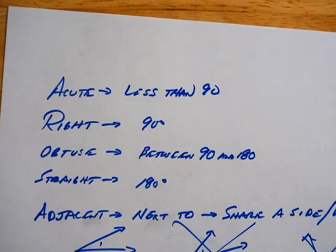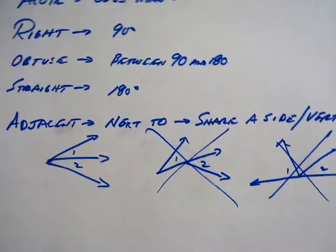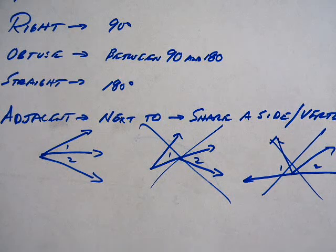So, so far we have acute, right, obtuse, and we've talked about adjacent angles.